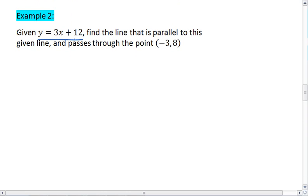Given y equals 3x plus 12, we're going to find a line that is parallel to this given line and passes through the point negative 3, 8. For our new line, we know that it has to have the same slope of the given line. So this new line has a slope of positive 3 as well. And it passes through the point negative 3, 8, where that is x and y.